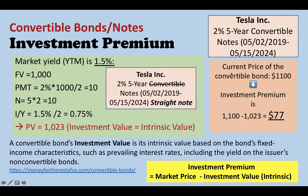Because the convertible note has a convertible option, most of the time this option will increase the value of the note. Let's say this Tesla note is traded on the market and the market is willing to offer $1,100 for this note. So the investment premium equals the current market price of the convertible note minus the investment value of the regular note — you get $77. This is called the investment premium, and this premium is purely due to the convertible option.